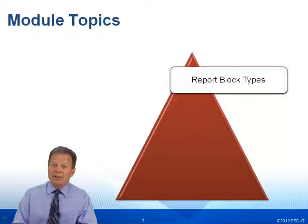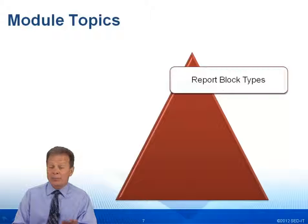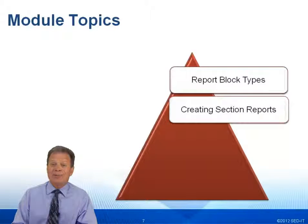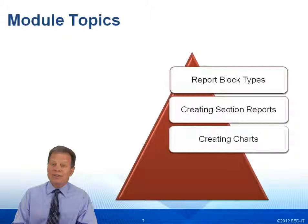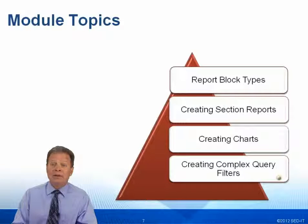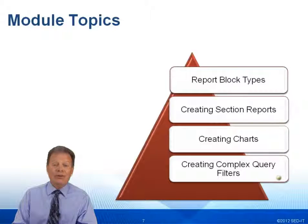Module topics include report block types — how do I take a vertical table and convert it to a horizontal table, a cross table, or whatever type you're looking to do, and that could be charts as well. How to create sectioned reports, what we call the master detail report. How to create extensive charts and apply extensive formatting to go along with it. How to create complex query filters. How do I expand on my prompts? How do I create AND and OR conditions that reflect real-life, typical scenarios you run into in a business environment?